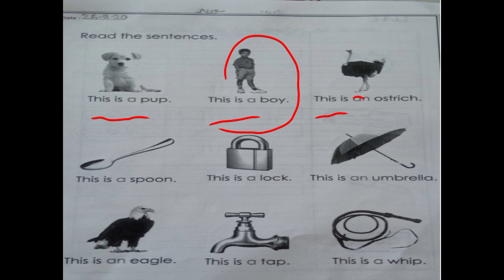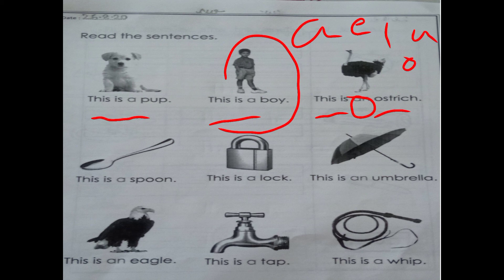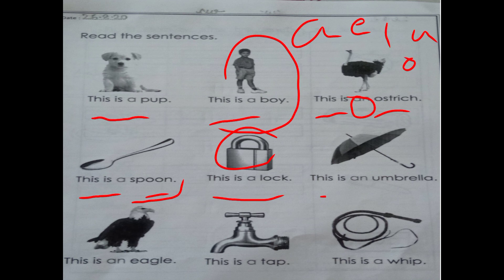Next: 'this is a...' — here 'an' is used because the next spelling starts with 'o'. A, E, I, O, U — these are called vowels. With vowels we always use 'an'. So we used 'an' here. Next: 'this is a spoon' — double O sound is 'oo'. Next: 'this is a lock' — lock means ek tala hai.